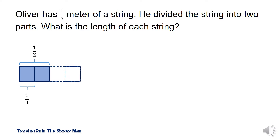Abstractly, we can say that n is equal to one half divided by two. I'll divide one half by two, so I'll rename two as two over one.